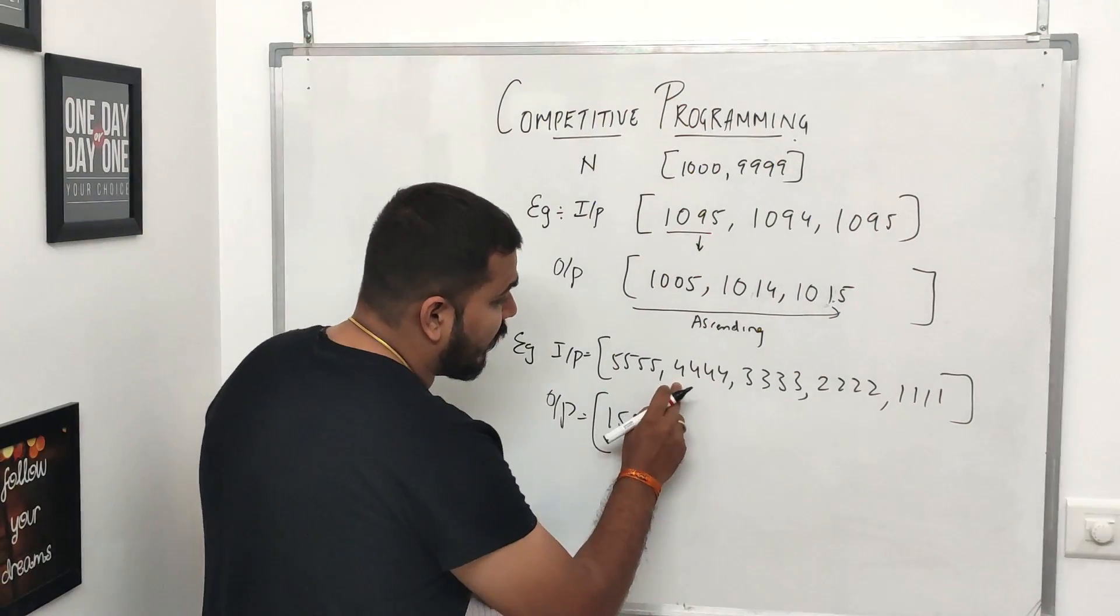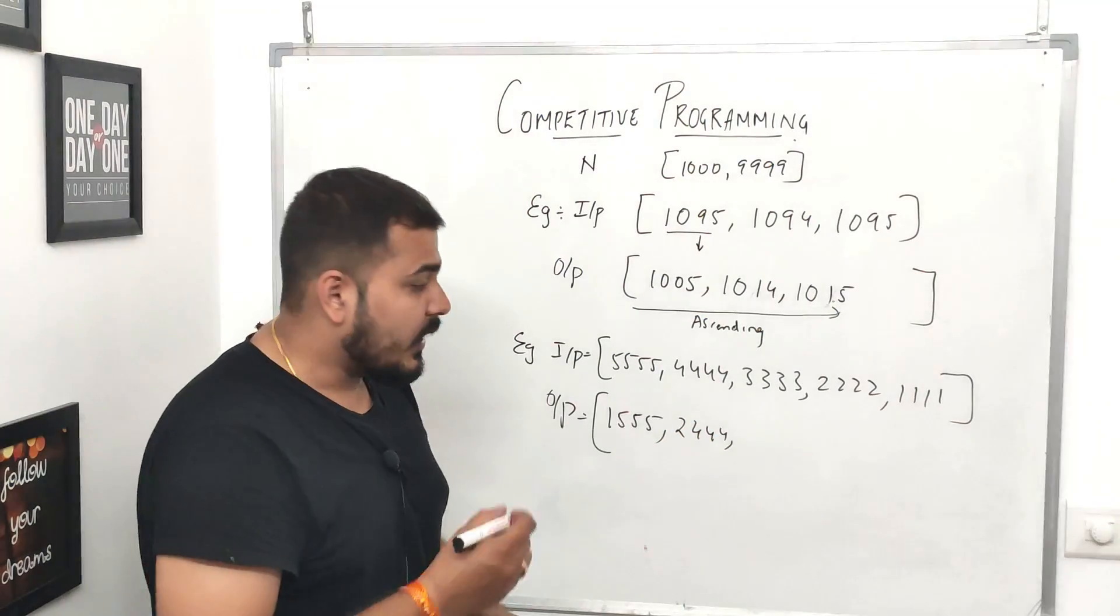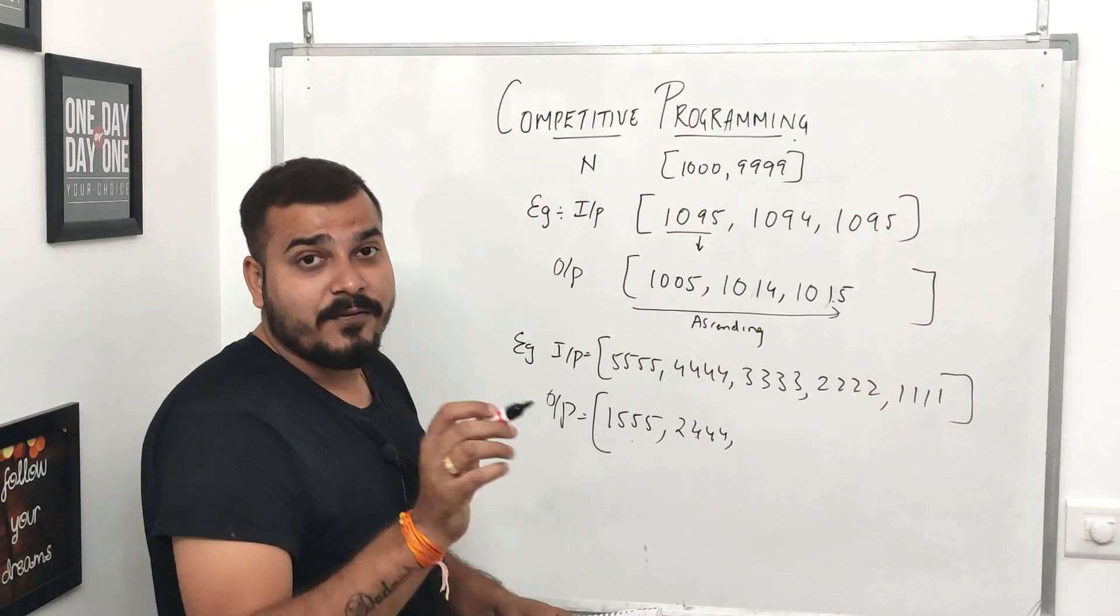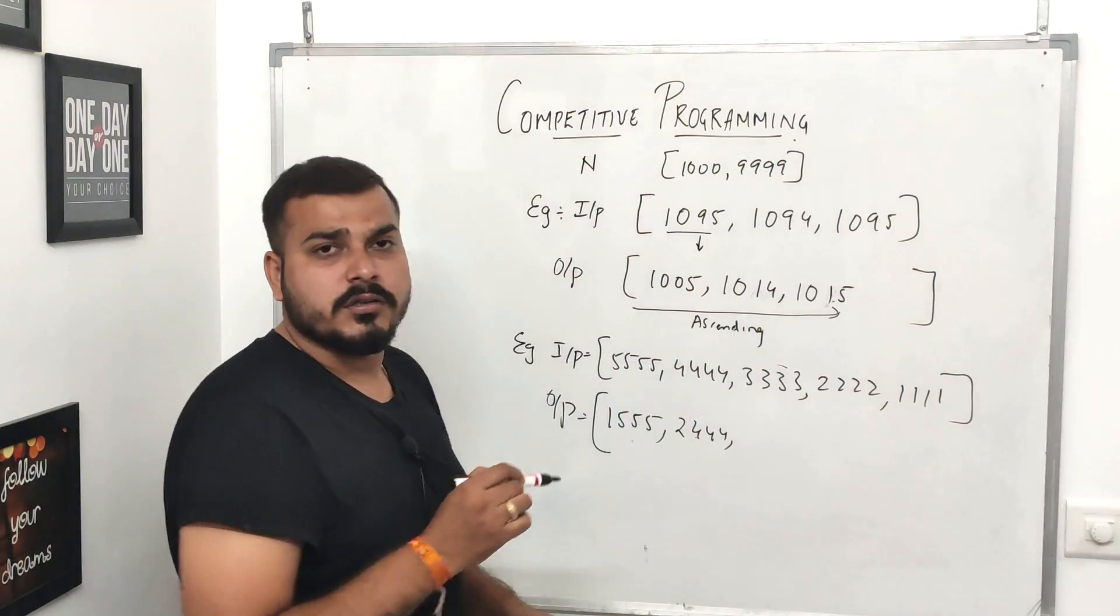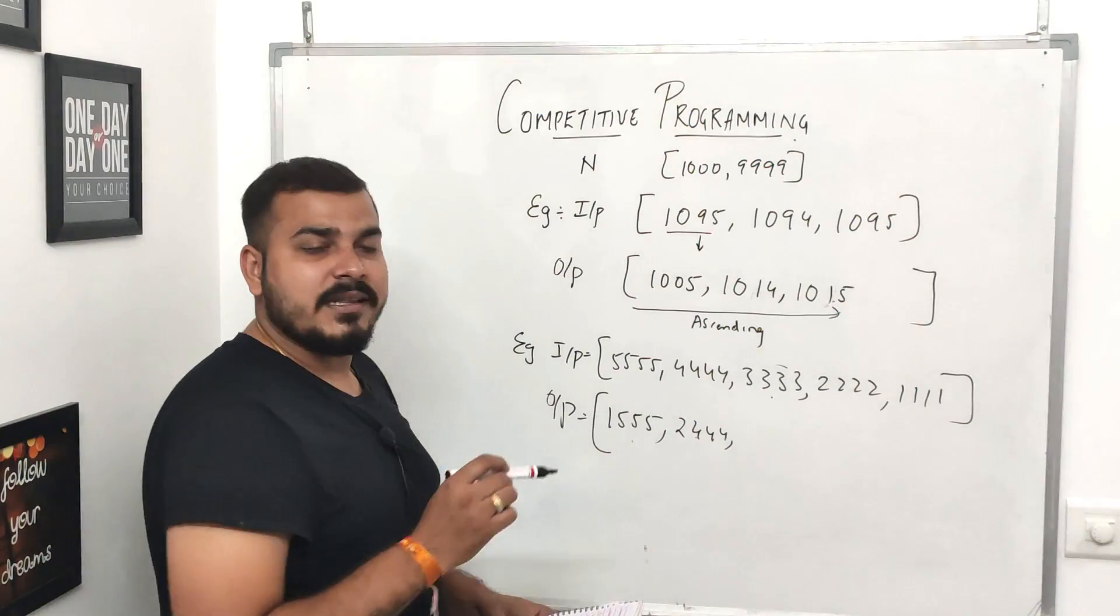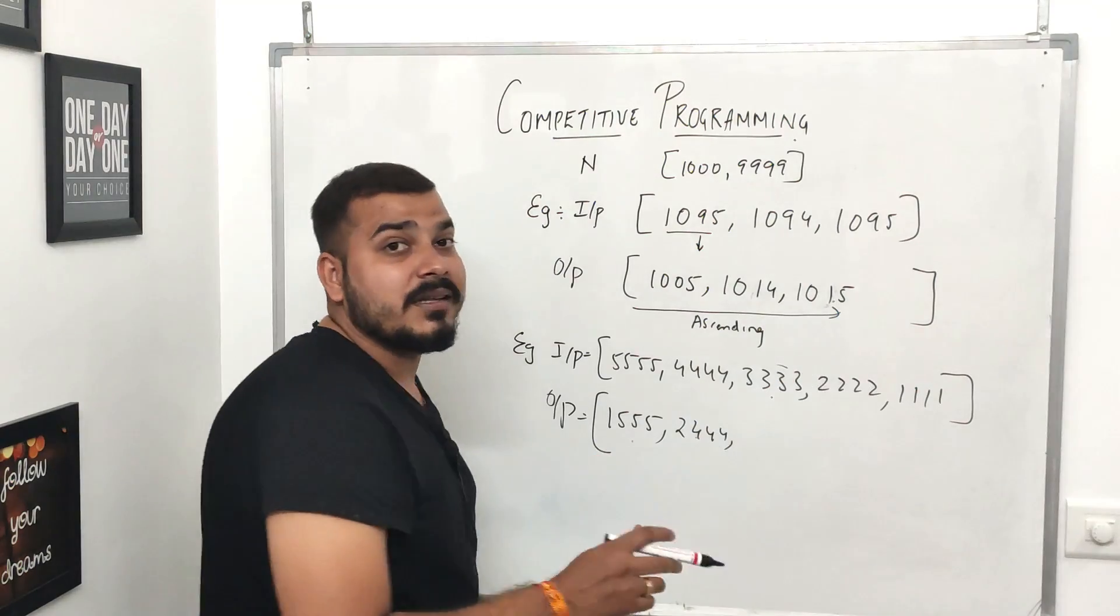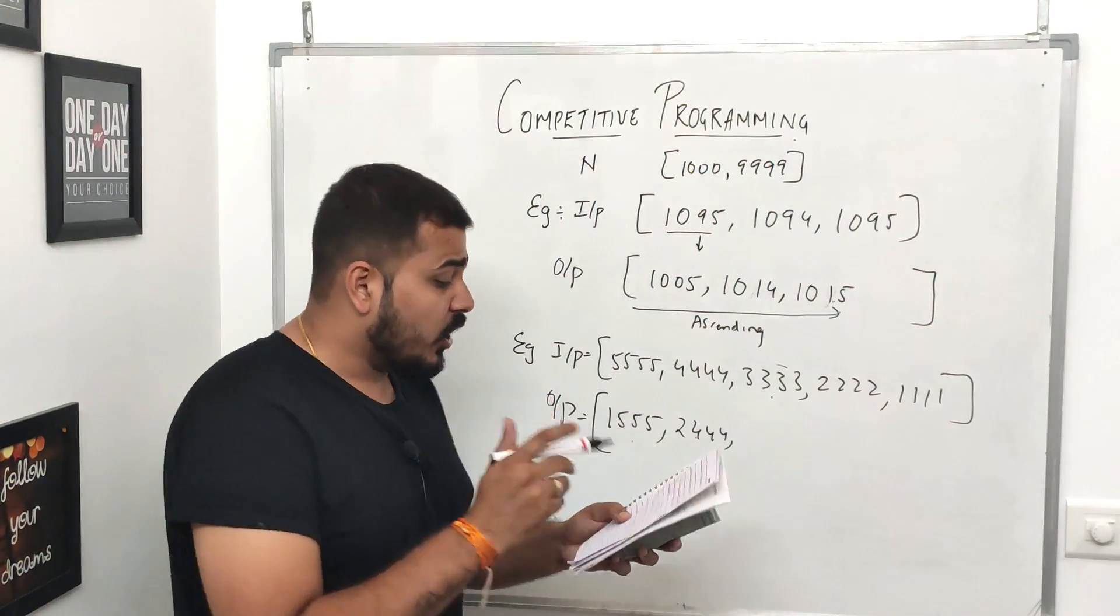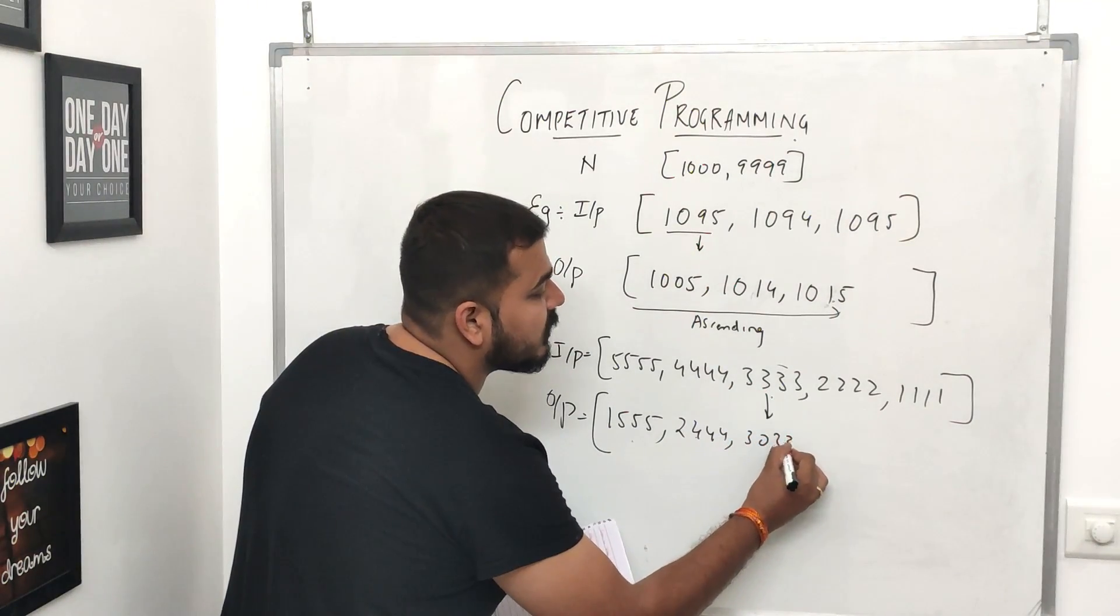Suppose if I want to find out the output by applying the same logic, the output should look something like this: this five I'll try to convert into one. Now this will become the smallest element. Similarly, if I try to convert this number, this four will get converted to two. Remember, this is greater than this - that is properly fine. What about this particular number? This number I can take directly also because this number is greater than this particular number. But understand, if I take it directly, what about these numbers - that also we need to take into consideration.